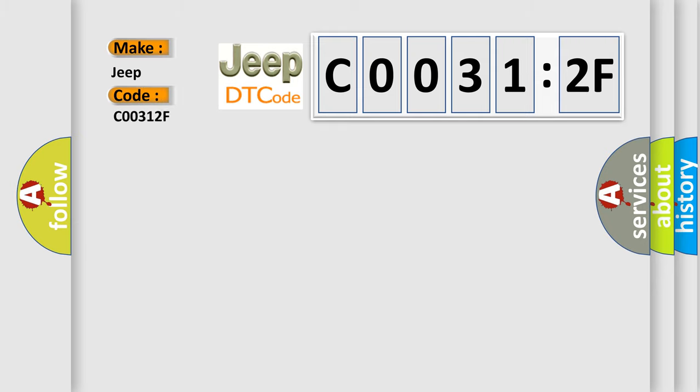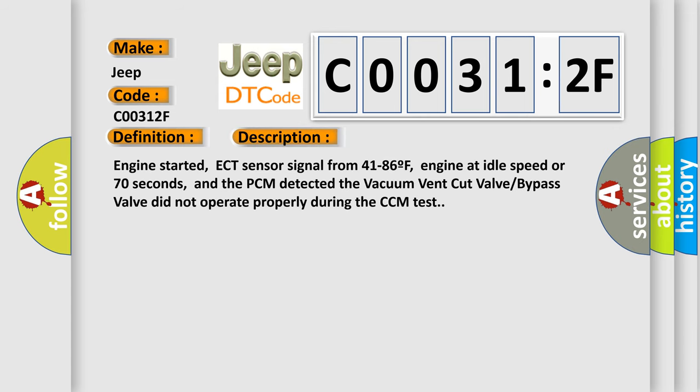The basic definition is EVAP vacuum cut valve or bypass range or performance. And now this is a short description of this DTC code. Engine started, ECT sensor signal from 41 to 86F, engine at idle speed for 70 seconds, and the PCM detected the vacuum vent cut valve bypass valve did not operate properly during the CCM test.